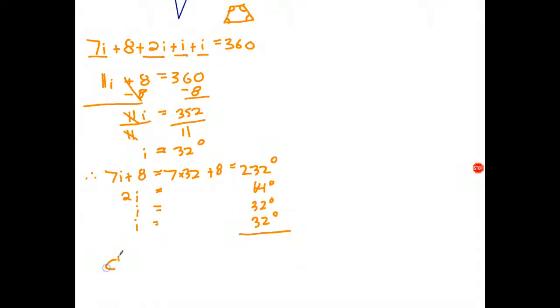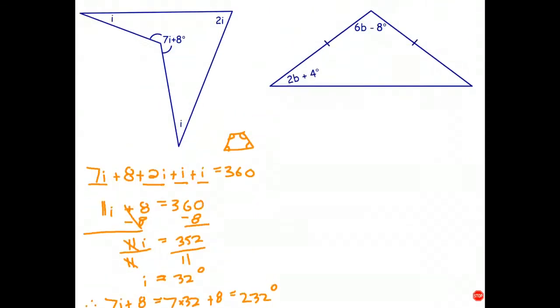And we can do that by simply adding the four angles. So 232 plus 64 plus 32 plus 32. And if you add up all of that, it does come to 360 degrees. So therefore, those are the size of the unknown angles. Okay, let's have a look at the last of the questions.